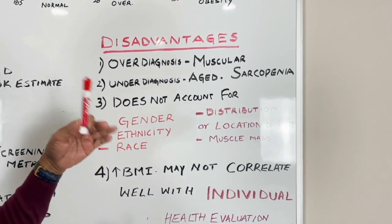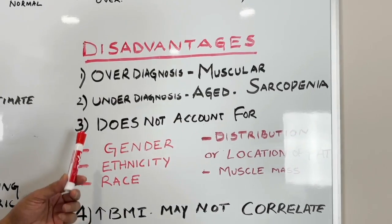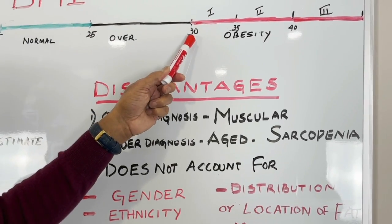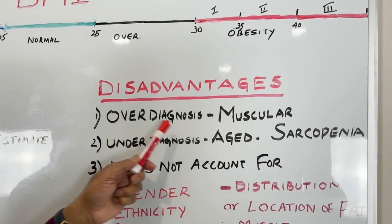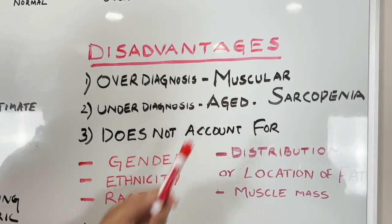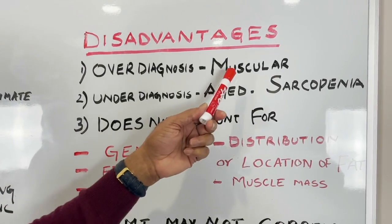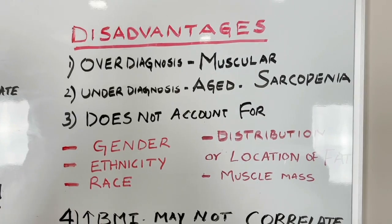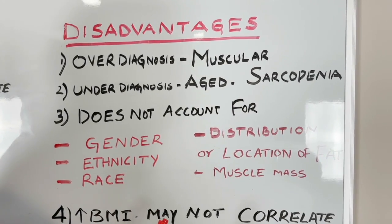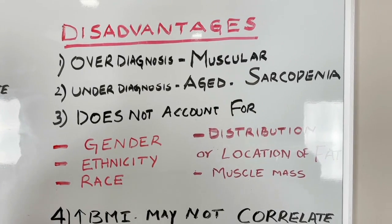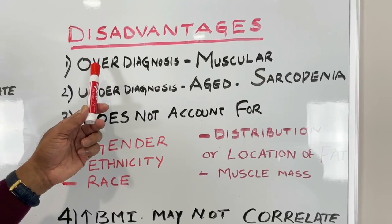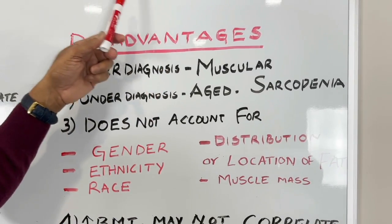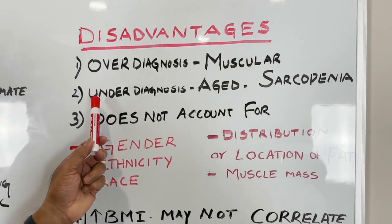Any test has limitations. For people with a BMI between 25 and 30, BMI tends to over-diagnose those who are very muscular. It actually penalizes muscular people, because muscle carries more weight than fat. Muscle is your metabolic engine — it burns more energy. So athletes and very muscular individuals are often over-diagnosed as overweight or close to obesity.